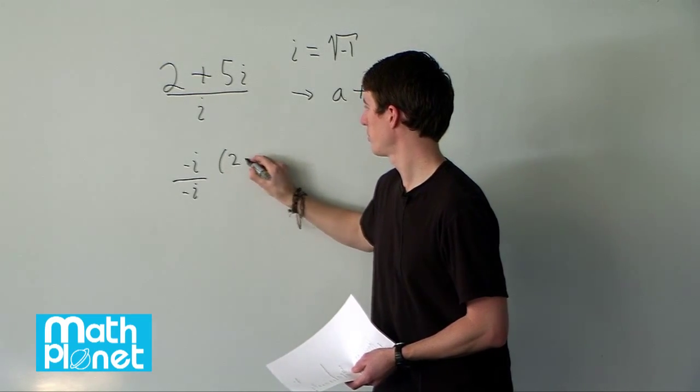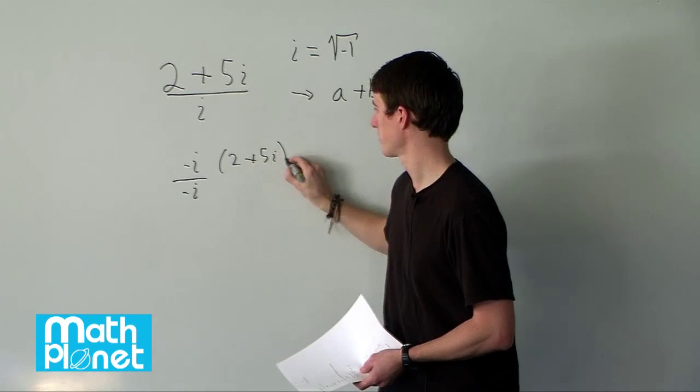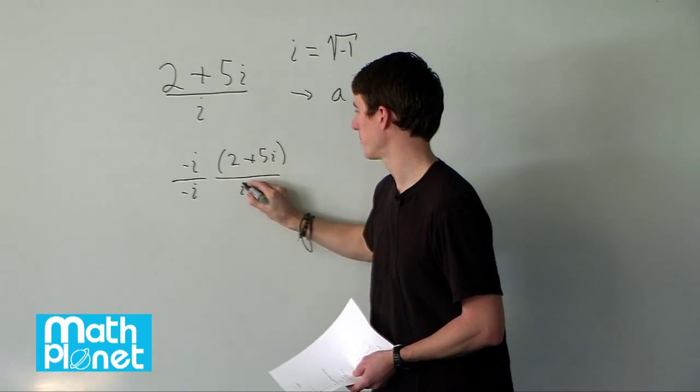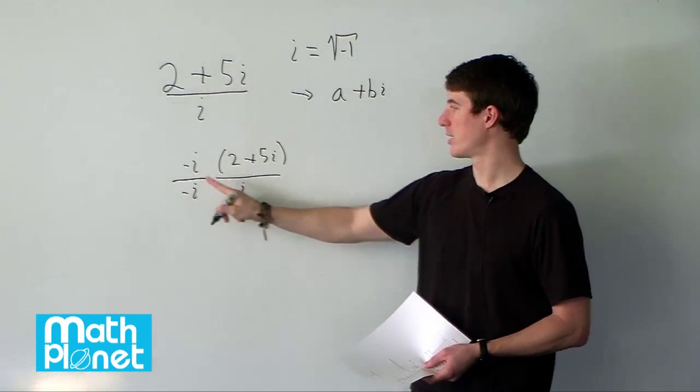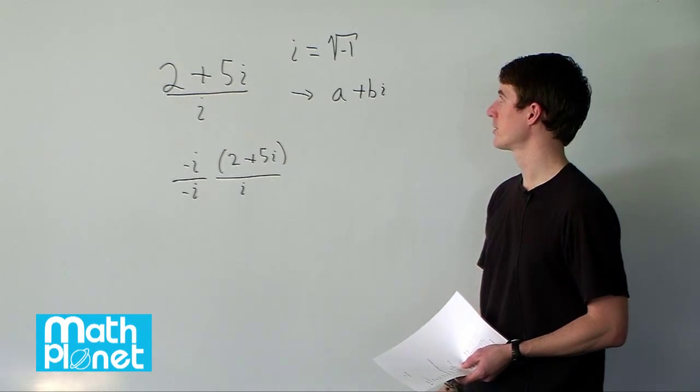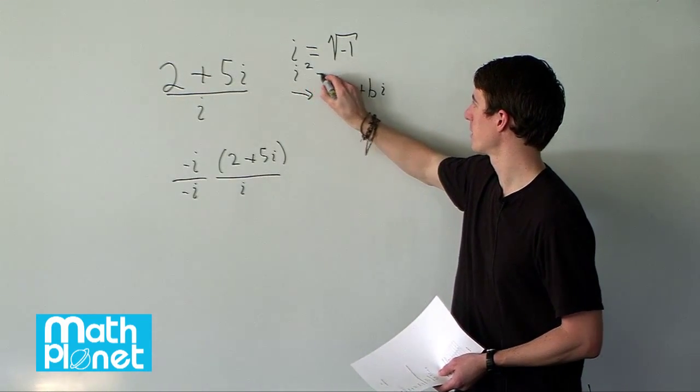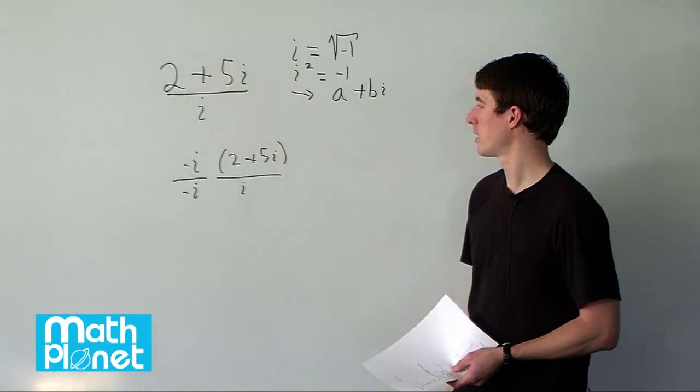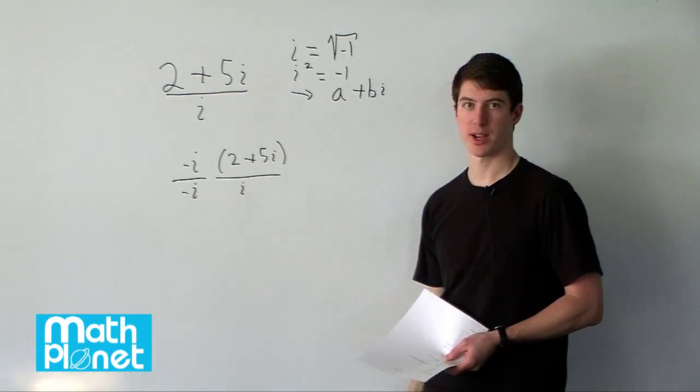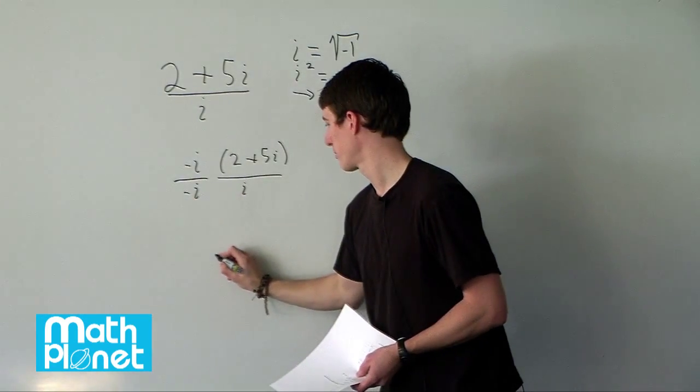So we still have 2 plus 5i and on the bottom i. So what does this give us? A negative times i squared. Well we can see i squared is just going to be negative 1. So negative times negative 1 gives us positive 1.